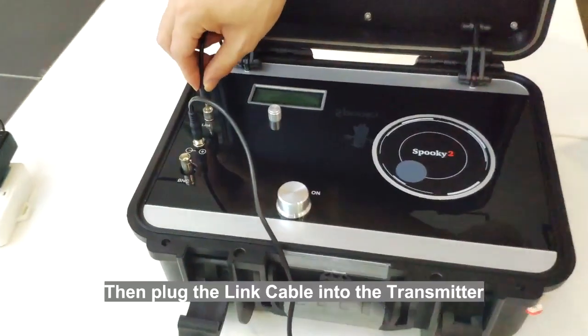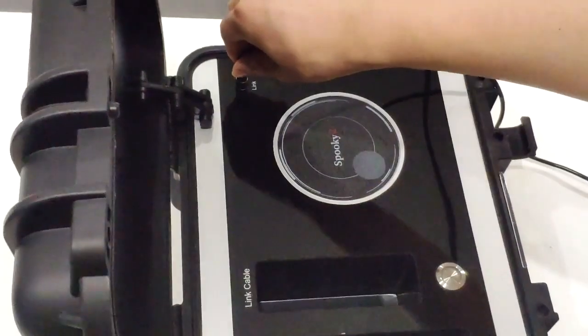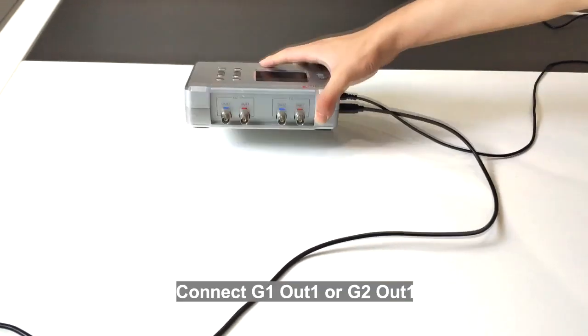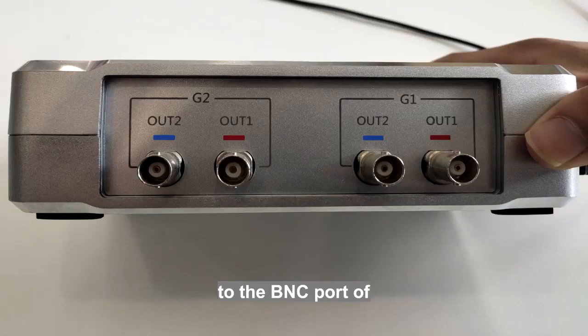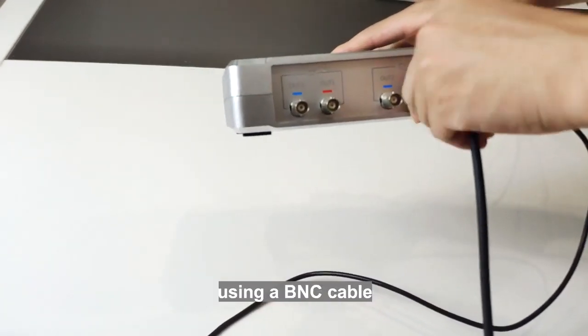Plug the link cable into the transmitter and receiver link connectors. Connect G1-OUT1 or G2-OUT1 to the BNC port of the Spooky2 Scalar transmitter. Here we connect G1-OUT1 to this port using a BNC cable.